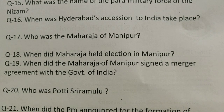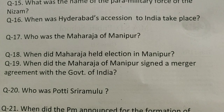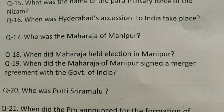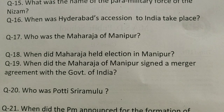Question number seventeen: Who was the Maharaja of Manipur? The right answer is Bodhchandra Singh. Question number eighteen: When did the Maharaja hold elections in Manipur? The right answer is June 1948. Question number nineteen: When did the Maharaja of Manipur sign a merger agreement with the Government of India? The right answer is September 1949.